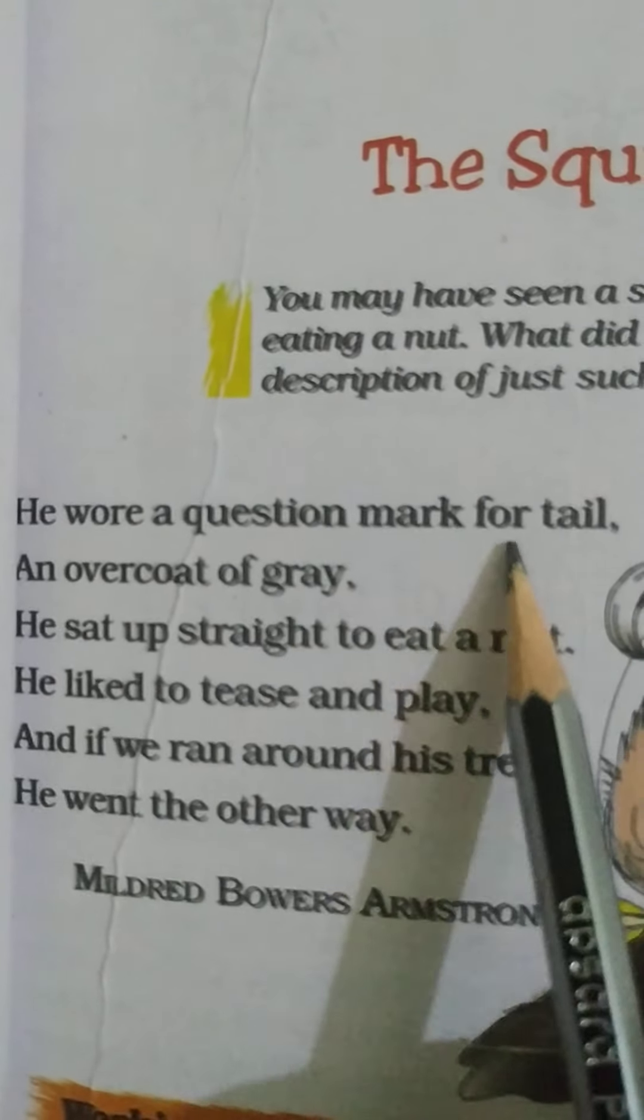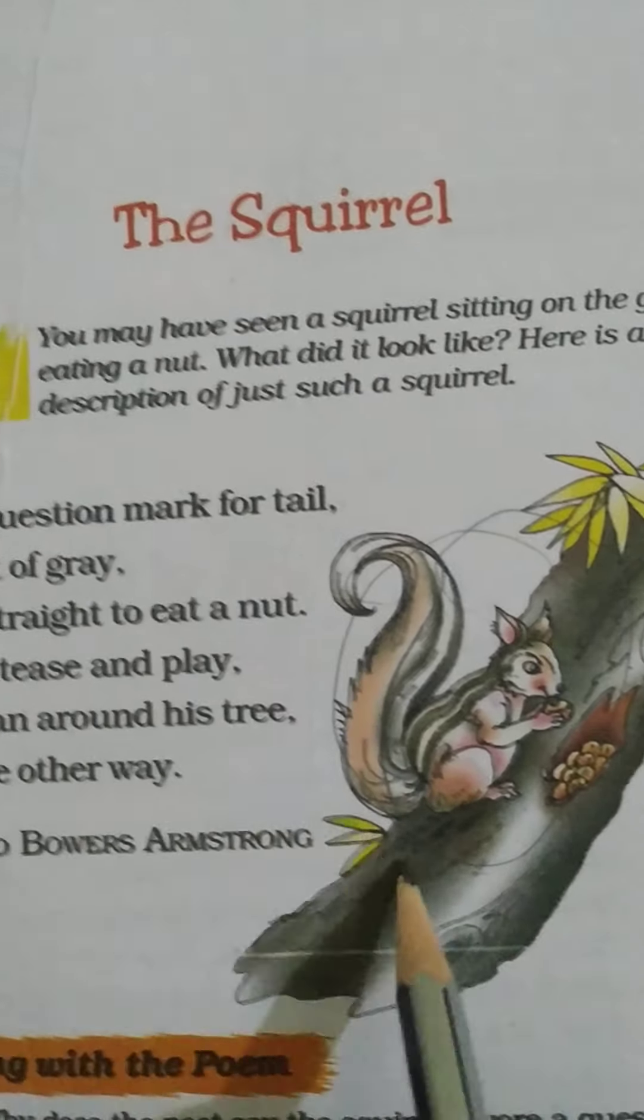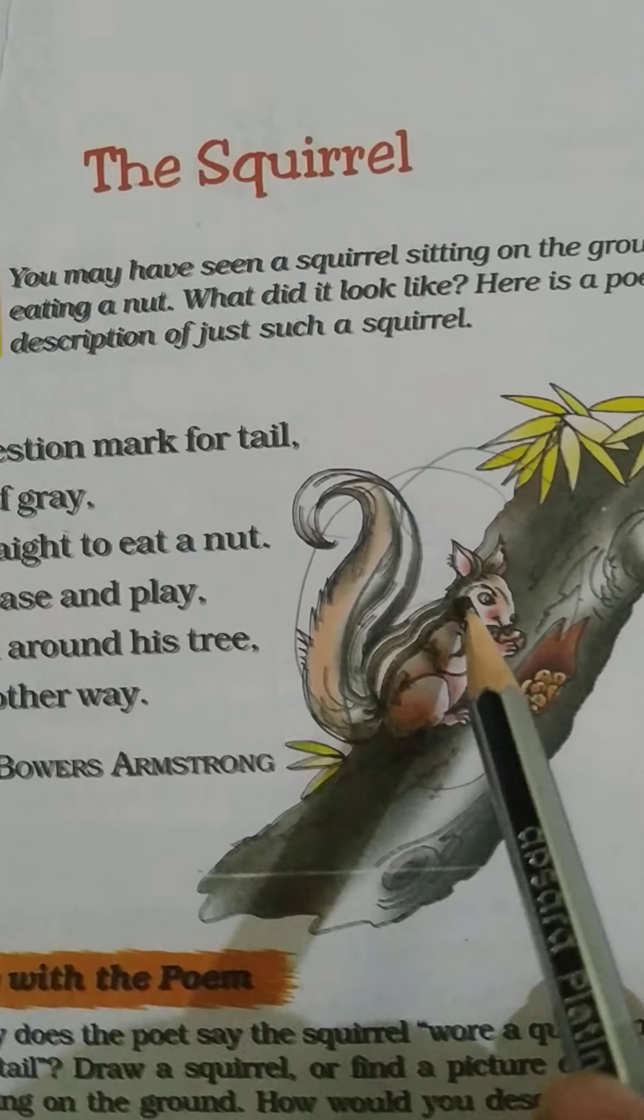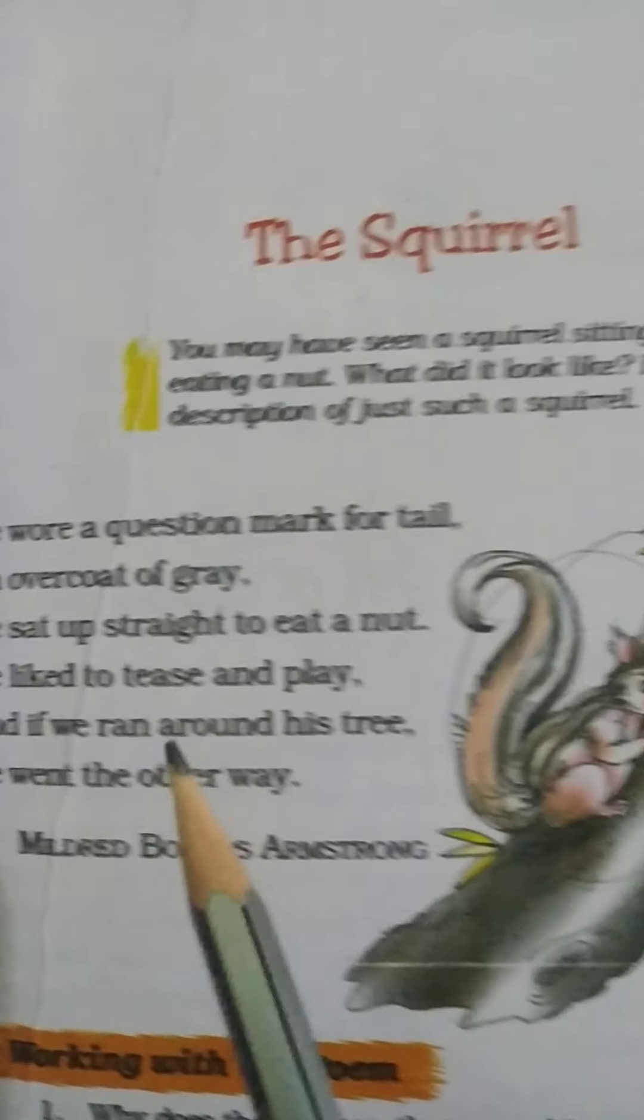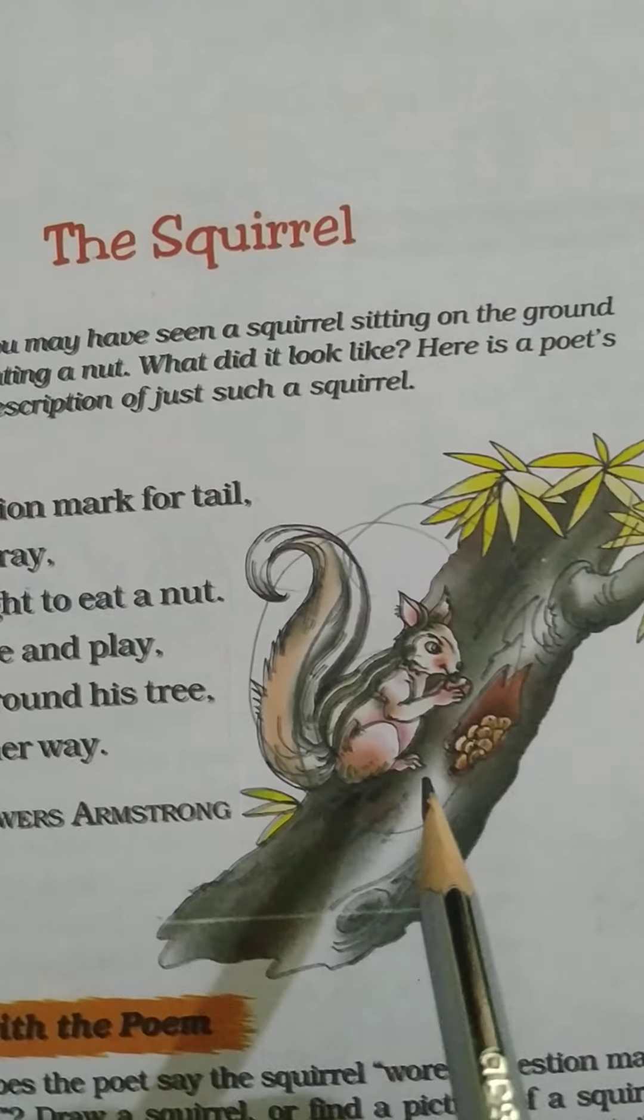He wore a question mark for tail. Look, it looks like a question mark shape. An overcoat of grey, which is on the ground, is a grey color. He sat up straight to eat a nut. What does it eat? A nut.